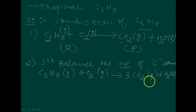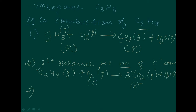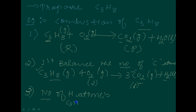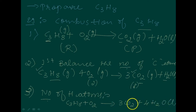Now carbon is balanced. But consider oxygen — on the product side there are 6 oxygen atoms, while on the reactant side there are only 2. Before balancing oxygen, we go to Step 3: balance the hydrogen atoms. C₃H₈ has 8 hydrogen atoms and H₂O has 2. By trial and error, multiply H₂O by 4 to get 4 × 2 = 8 hydrogen atoms. The equation is now: C₃H₈ + O₂ → 3CO₂ + 4H₂O, giving 8 hydrogen atoms on each side.